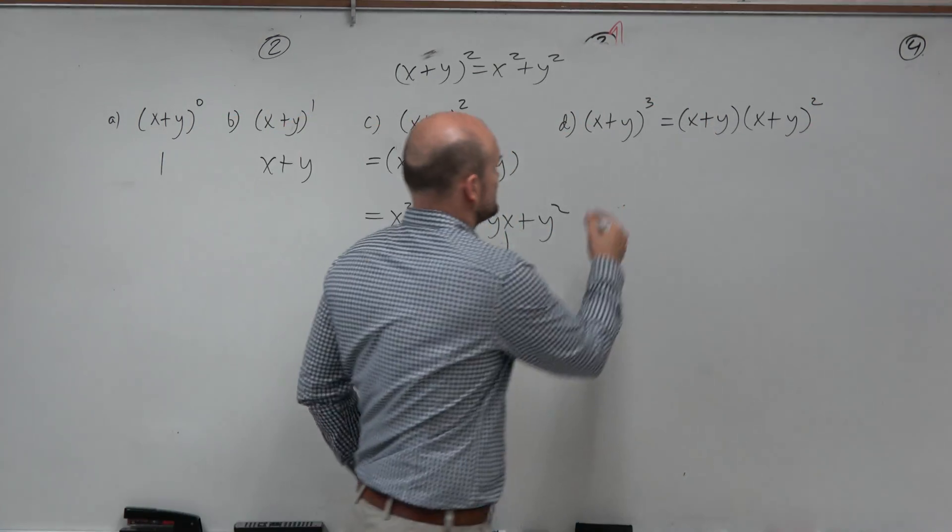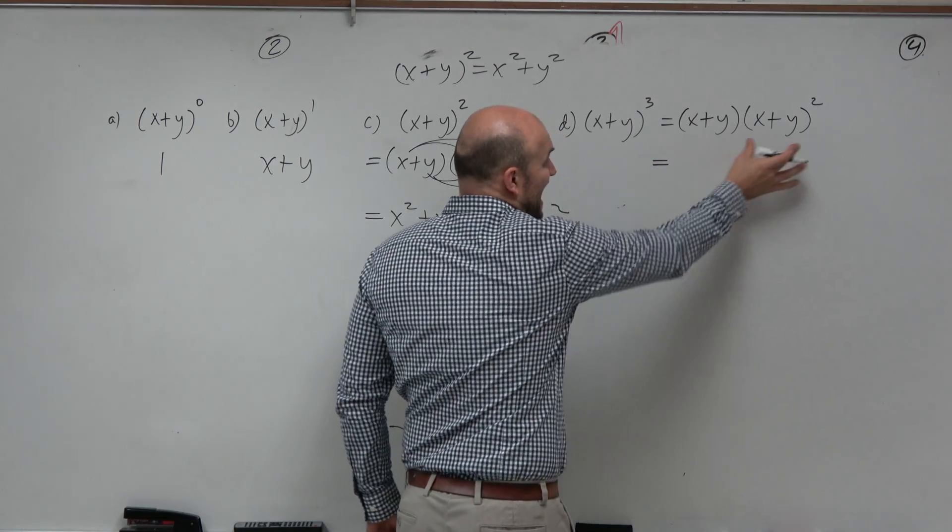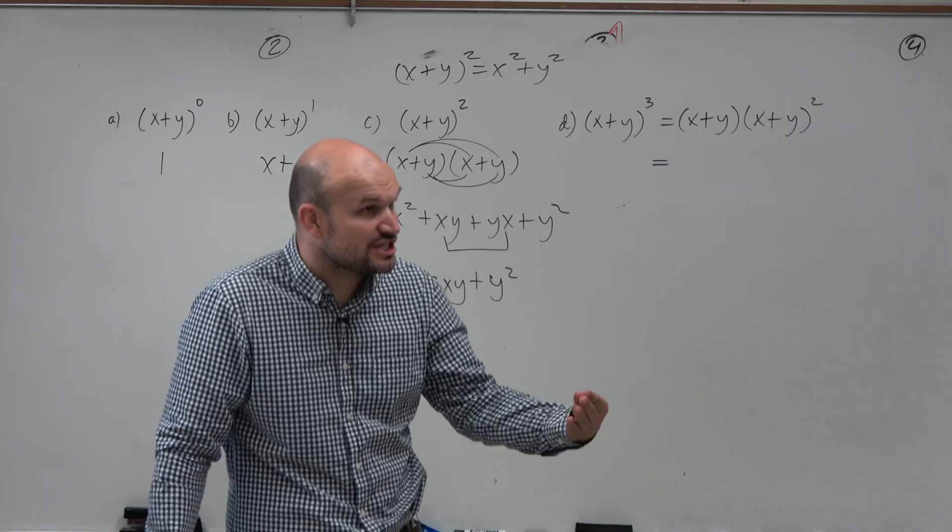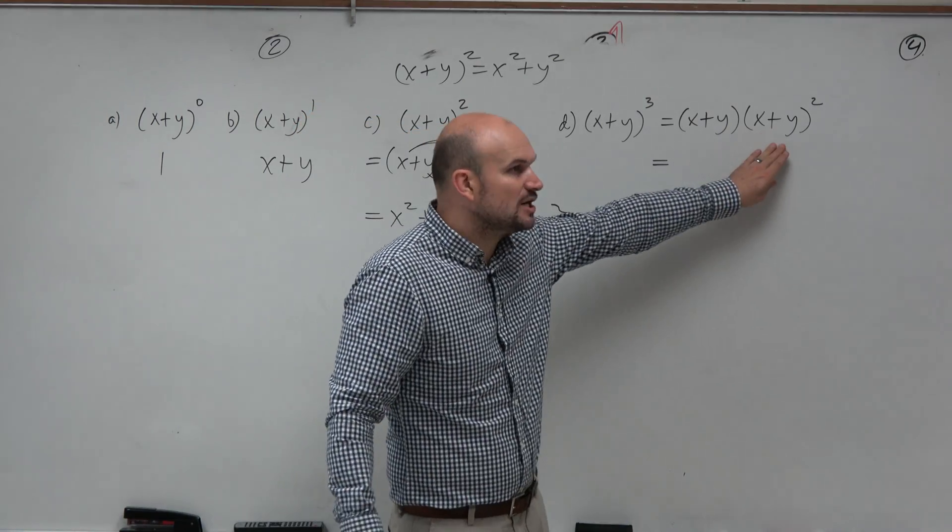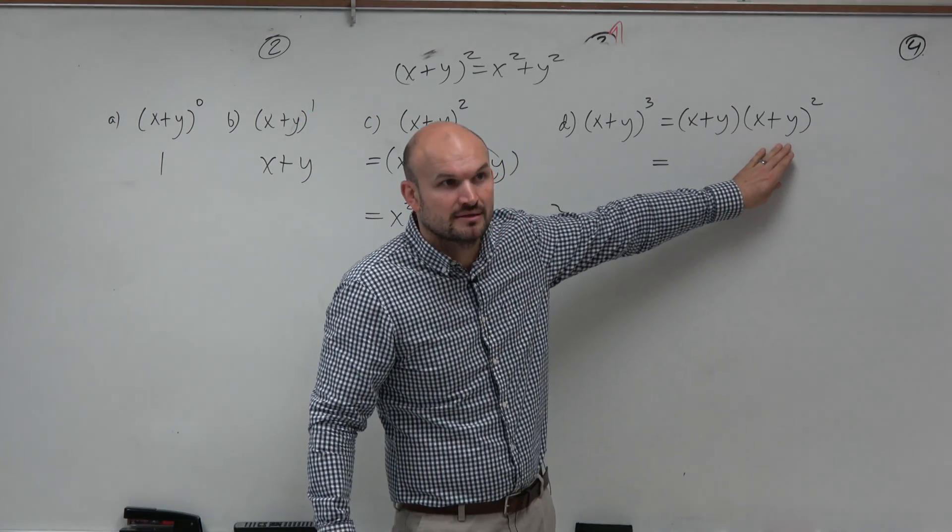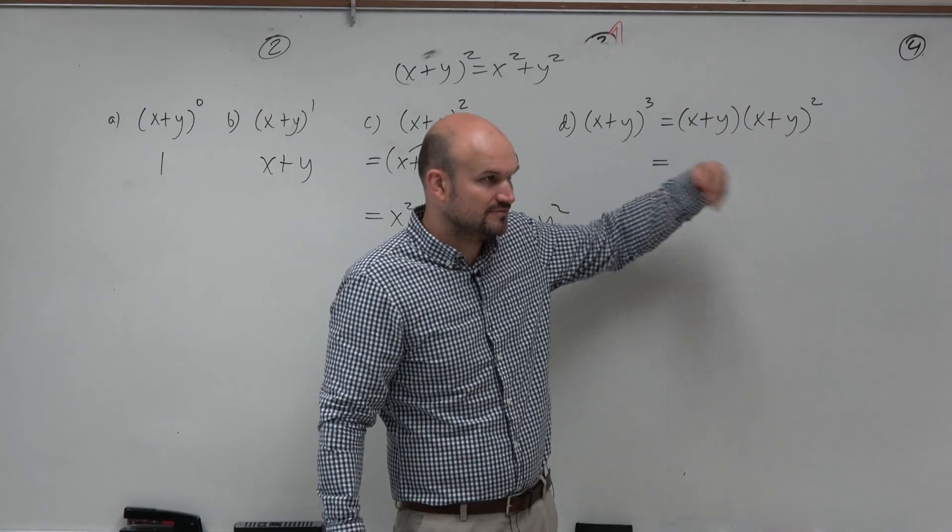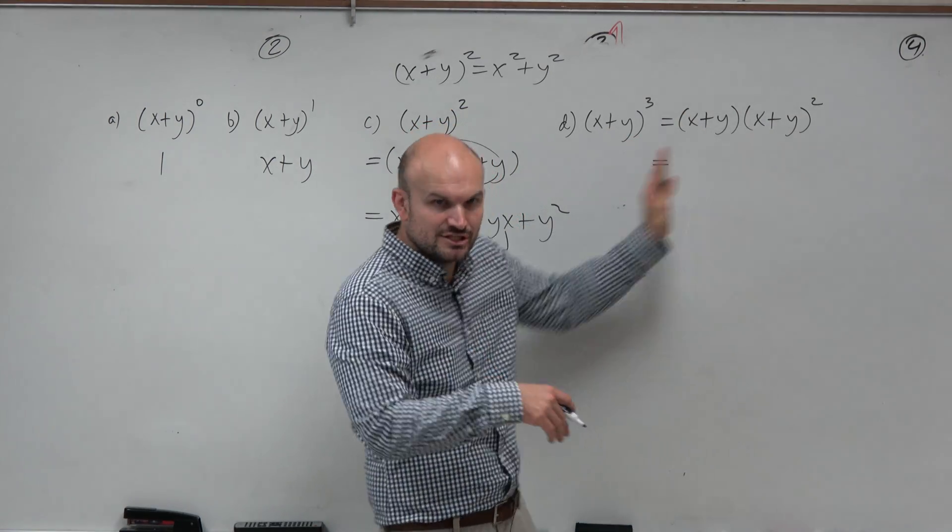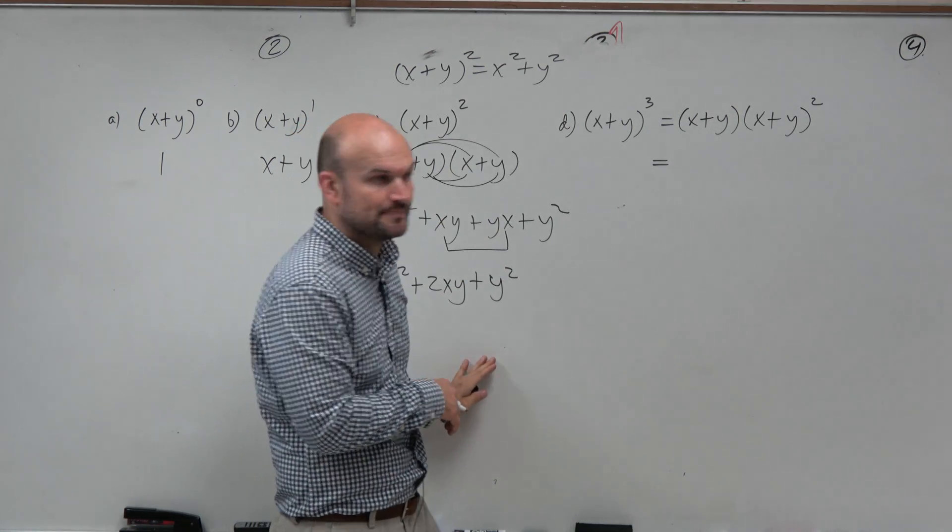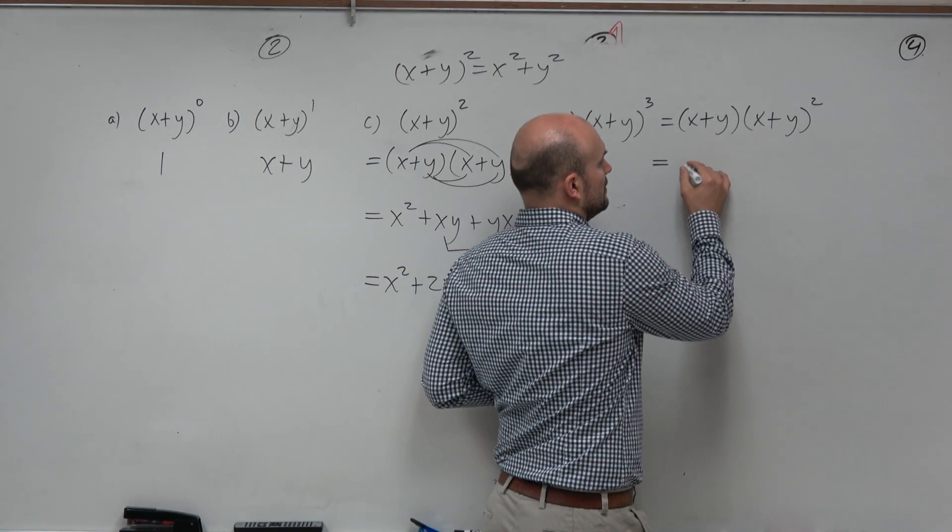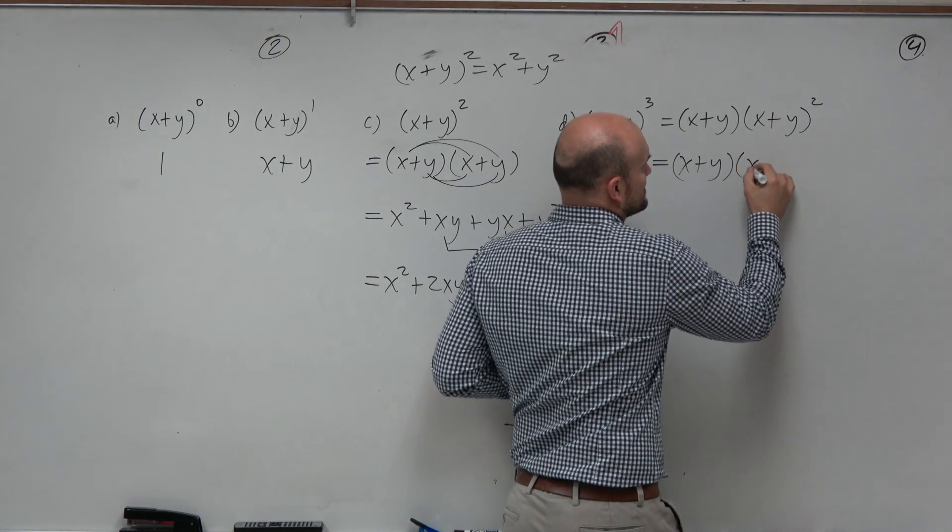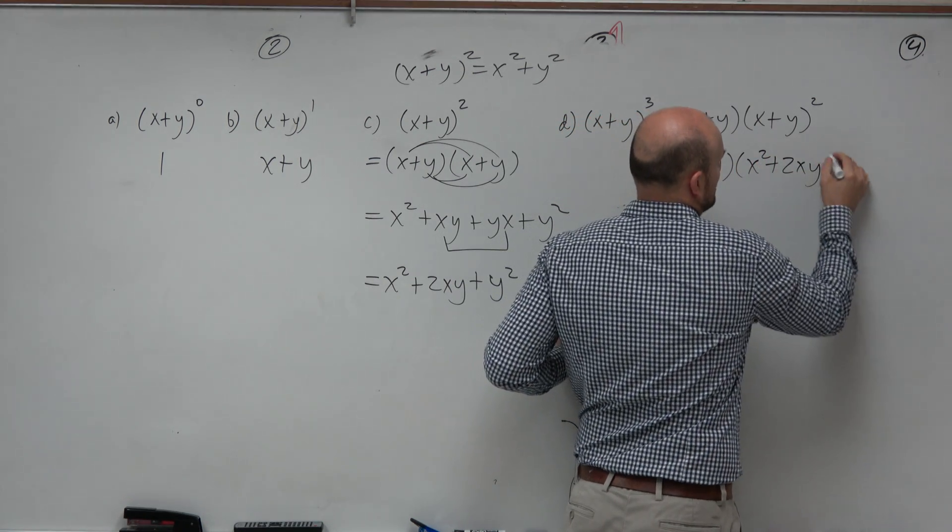Now, the reason why I like this notation a little bit better is I already know what x plus y squared is, because I just did it. Now, if I didn't just do it, I'm pretty comfortable with squaring something. I can kind of do that in my head once you have a lot of practice, or at least I can easily do that on my own. So if I multiply this, this is really the same thing as x plus y times x squared plus 2xy plus y squared.